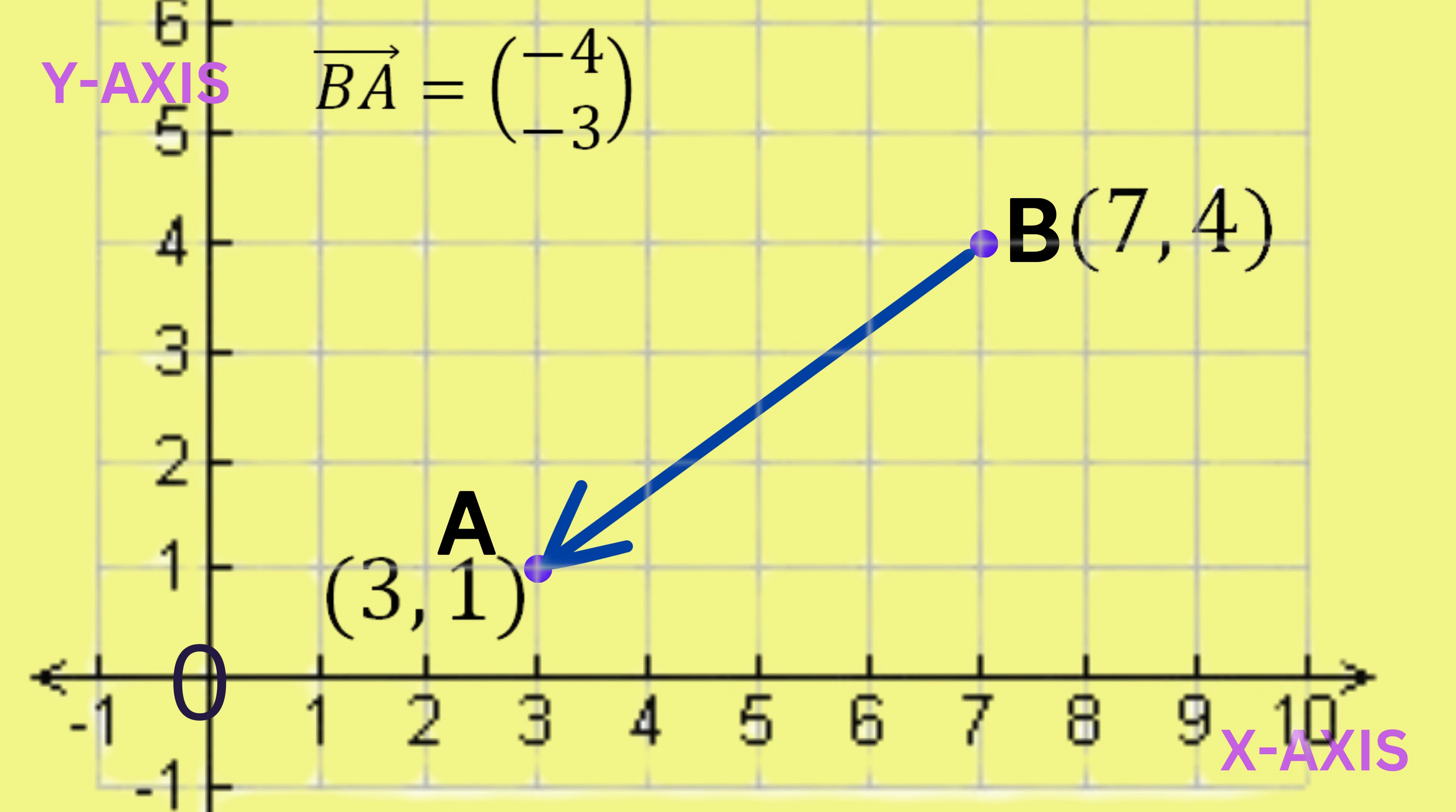Note again that we can also get the vector BA by reversing the points and then subtracting. In this case, the vector BA is equal to A minus B. The same values we get when we manually counted the movement from B to A.